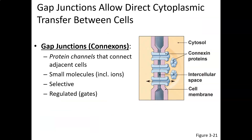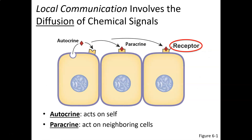Direct cytoplasmic transfer is where information is directly transferred from one cell to the next, often through gap junctions, sometimes known as connectons. Information literally travels from one side to the other through that protein channel. It can be small molecules, including ions, and these channels tend to be very selective, just like ion channels, with most regulated by gates. Direct cytoplasmic transfer occurs in the heart and in certain parts of the intestines.